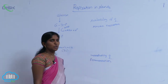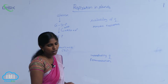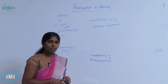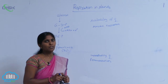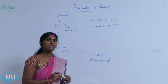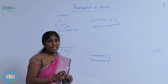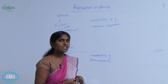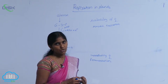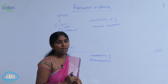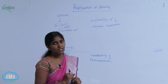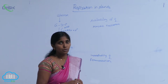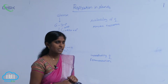Fermentation means there is a production of ethyl alcohol. Based on the product, fermentation is divided into many types. If ethyl alcohol is produced, the fermentation type is alcoholic fermentation. If lactic acid is produced, that is lactic acid fermentation. If acetic acid is produced, that is acetic acid fermentation. During fermentation, there is no availability of oxygen — in the absence of oxygen — the pyruvic acid or phosphoenol pyruvic acid are converted into ethyl alcohol and also lactic acid.